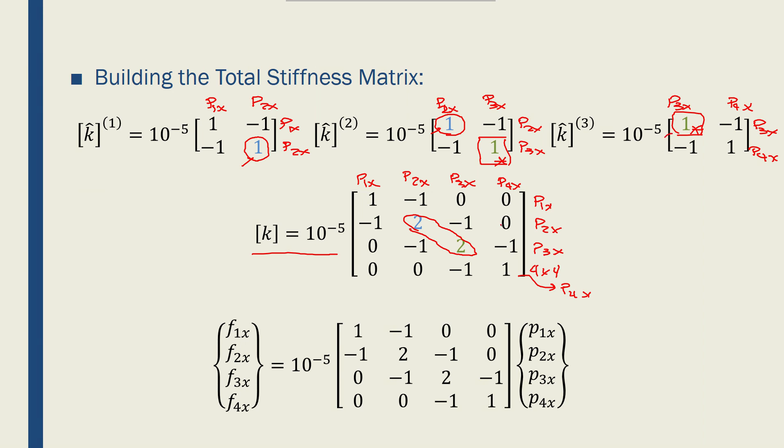Now that I have the stiffness matrix, I can relate the fluid flow rates of the nodes to the potentials of the nodes. f1x, f2x, f3x, and f4x are the nodal fluid flow rates. p1x, p2x, p3x, and p4x are the nodal potentials. Now I have to apply the boundary conditions and solve for the problem.